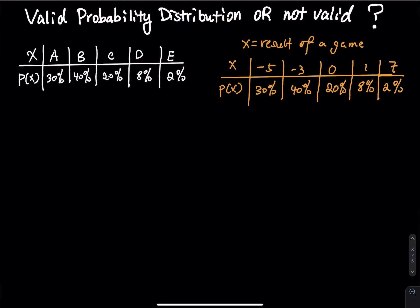Let's take a look at the first table. What does x represent? In the first table, let x represent the grades in my class — A, B, C, D, and F. The grade distribution is: 30% got an A, 40% got a B, 20% got a C, 4% got a D, and 2% got an F.